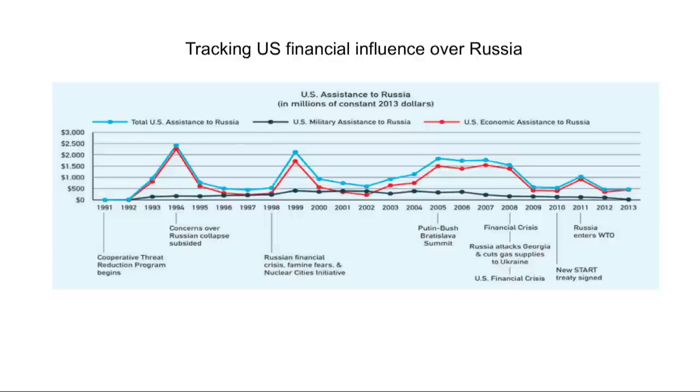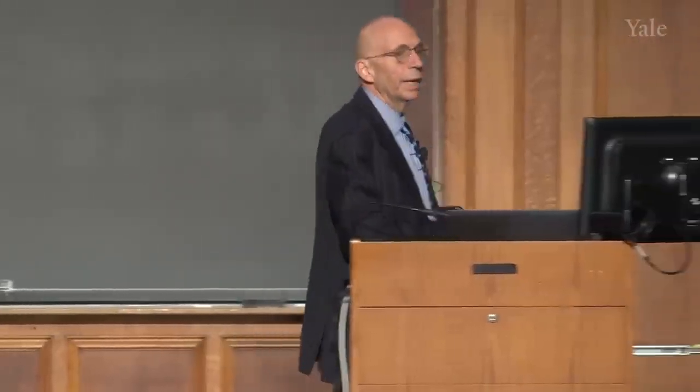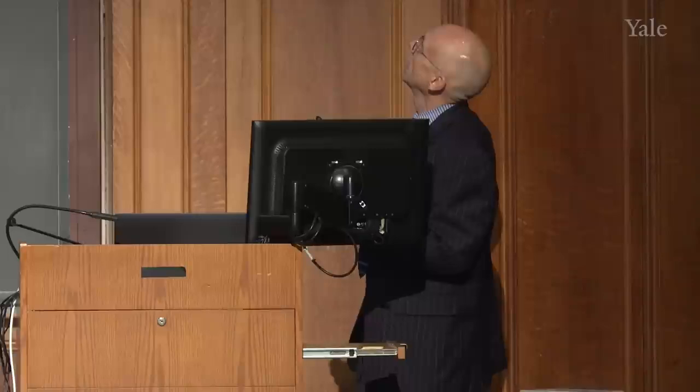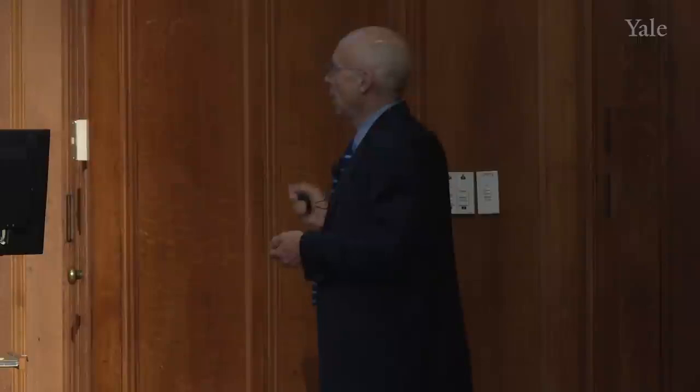The best book about this is Christopher Miller's Putinomics, which I've put on the suggested reading list. Then you can see what happens after the financial crisis — not only does US aid go south, but so does US influence. We'll talk more about that later.